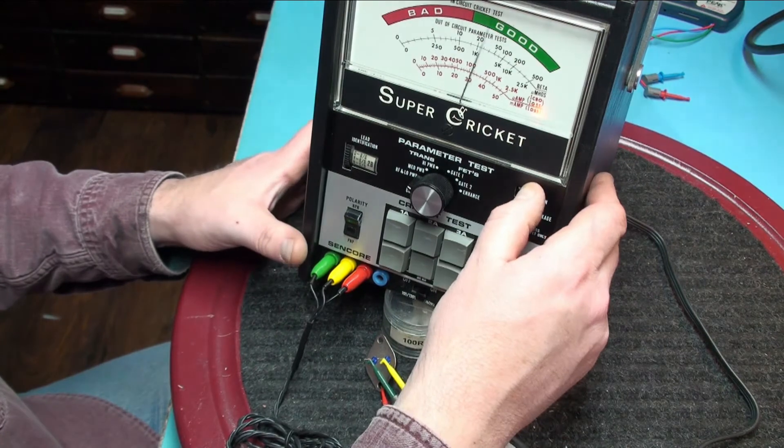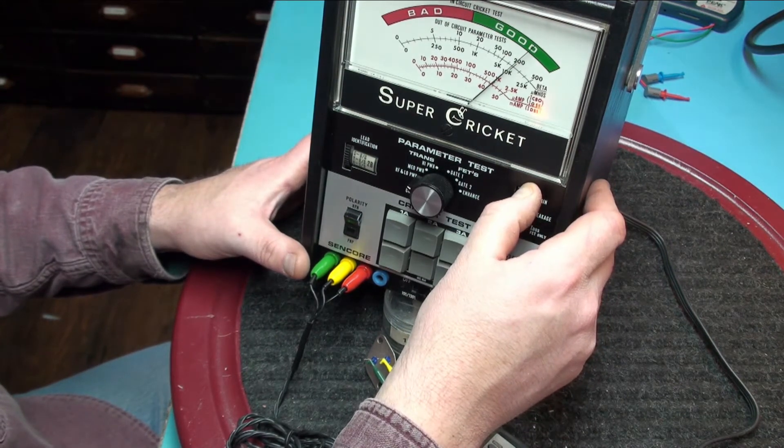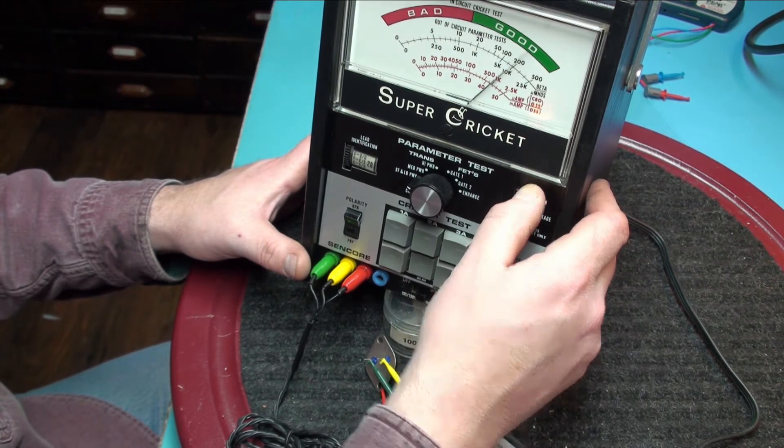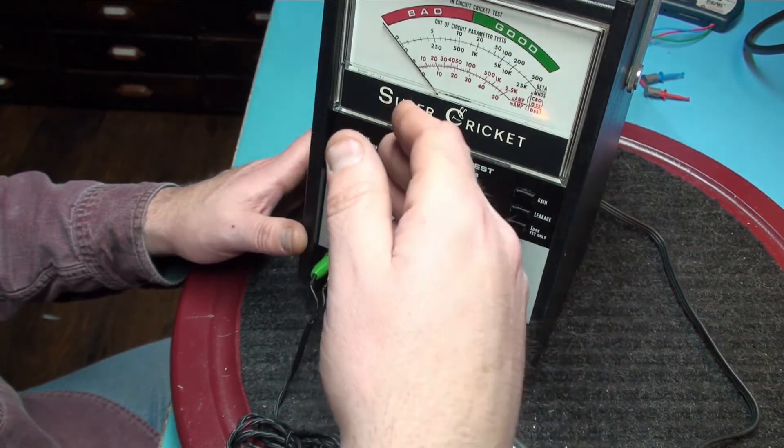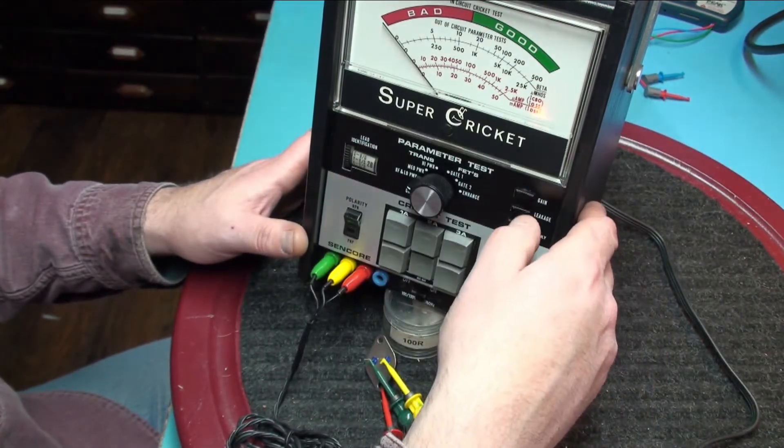So we have now determined the lead identification. We also determined the gain. So we have a gain of 200 on this. This device would be really handy for gain matching of transistors and audio circuits.